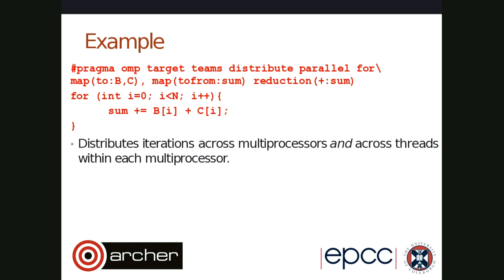To do this on a GPU using the earlier example, you need a long directive: '#pragma omp target teams distribute parallel for' with the data mapping and reduction clauses on the end. That will distribute iterations across multiprocessors and also distribute iterations across threads within each multiprocessor, exploiting all the hardware threads on the GPU. You can also add SIMD into the mix, but for GPUs it's not really clear and different implementations have taken different points of view — is the parallelism between cores inside a single multiprocessor SIMD parallelism or threaded parallelism? The OpenMP specification isn't clear about this, and different vendors have taken different approaches.